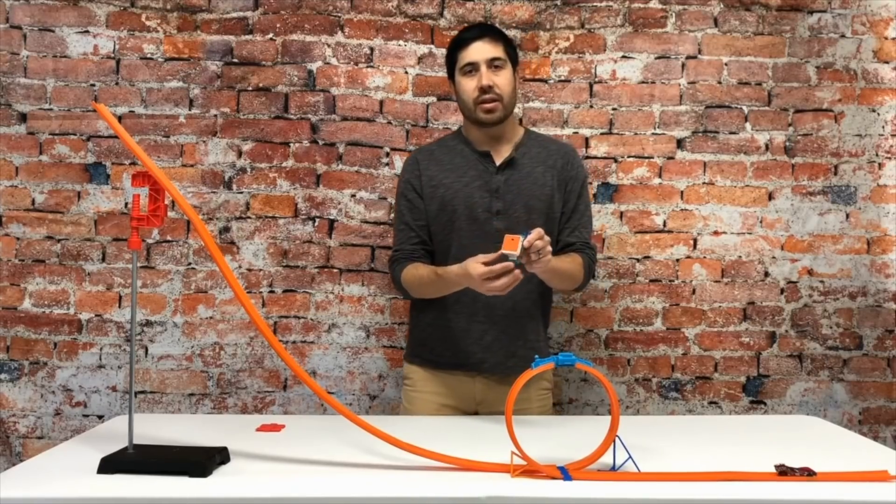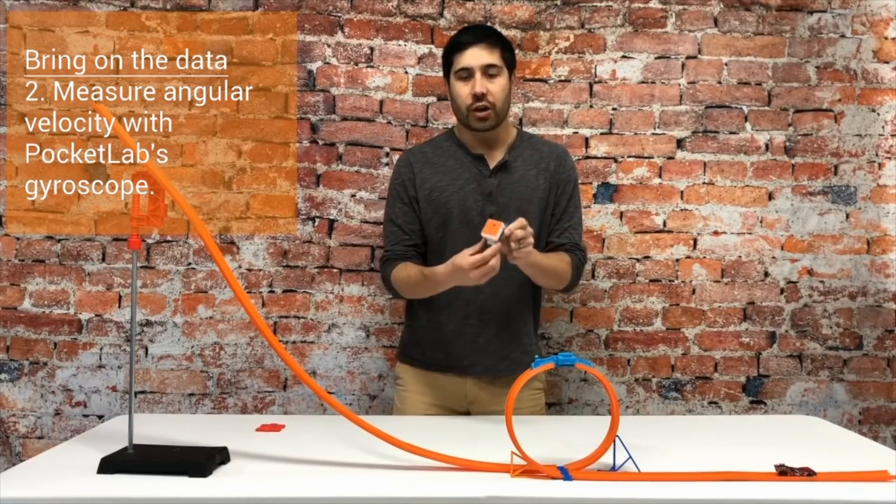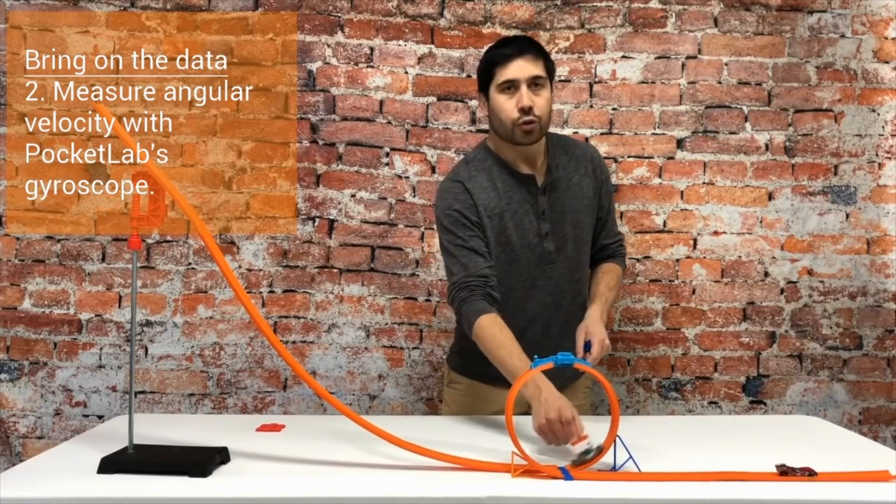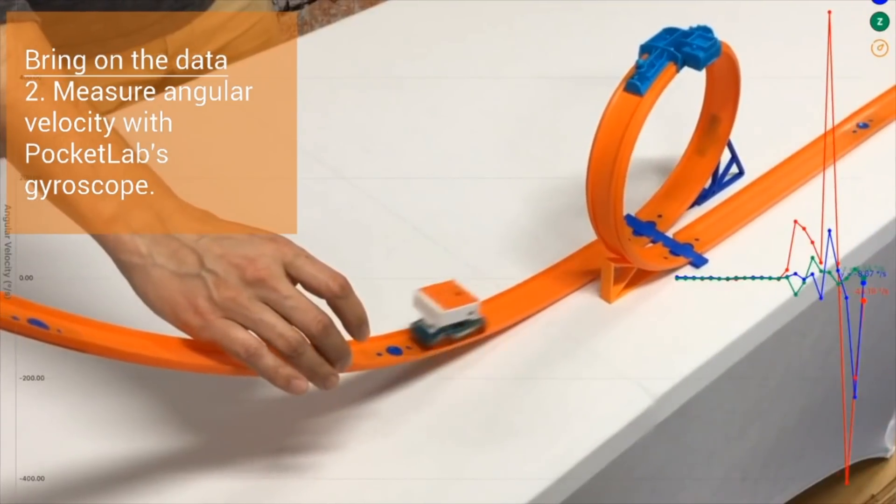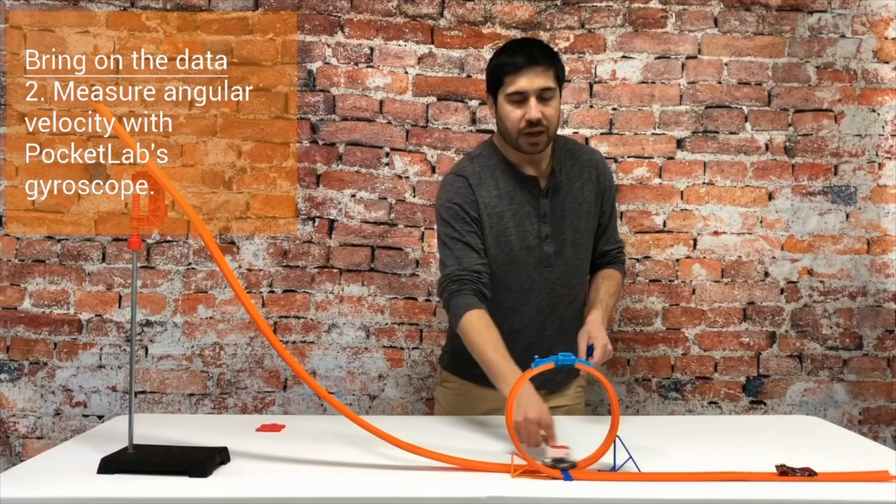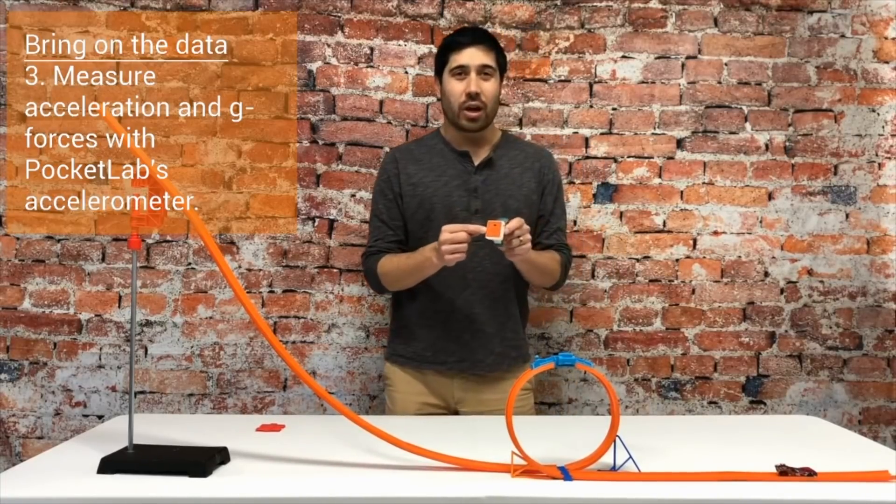The Pocket Lab has not only a magnetometer to detect the magnetic field timing gates, but also a gyroscope. And when the Hot Wheels car goes through the loop, we're able to measure the angular velocity or the rate of change of the angular rotation as it's moving through that loop.